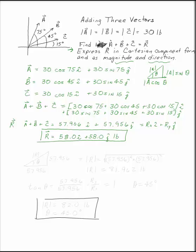The other part of what we're looking for is to express R in magnitude and direction. To find the magnitude of R, use the Pythagorean theorem. R looks like 57.956i and 57.956j. This is your magnitude of R. So the magnitude of R is the square root of 57.956 squared plus 57.956 squared, which is equal to 81.962 pounds.